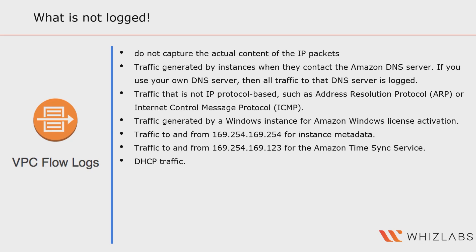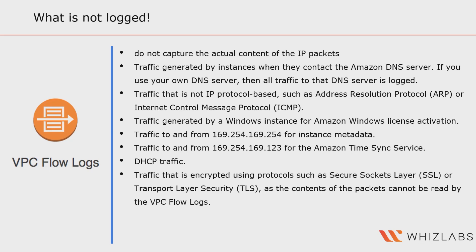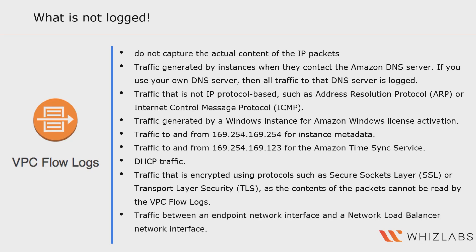Additional traffic types not captured include DHCP traffic, traffic encrypted using protocols such as SSL or TLS as the packet content cannot be read by VPC Flow Logs, and traffic between an endpoint network interface and a network load balancer network interface. It is important to keep in mind that VPC Flow Logs are not a replacement for other security measures such as access control policies, intrusion detection systems, or network segmentation. Organizations should use a combination of tools and techniques to ensure the security of their AWS environment.